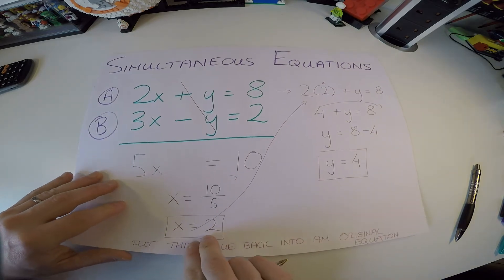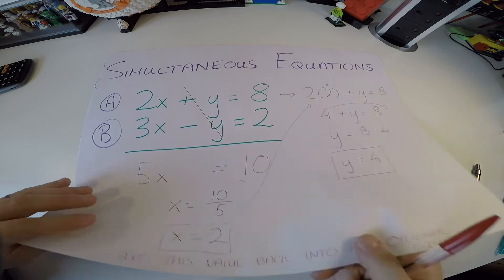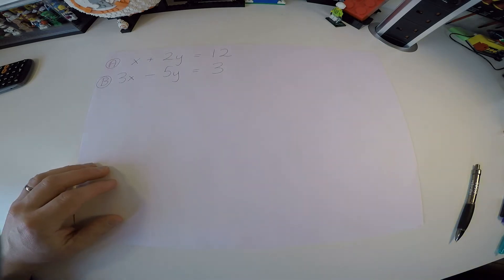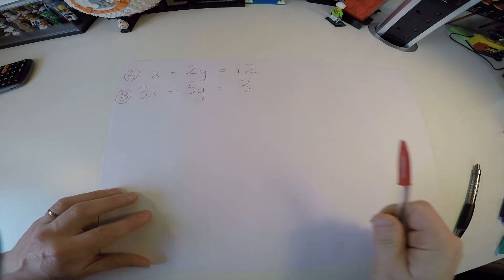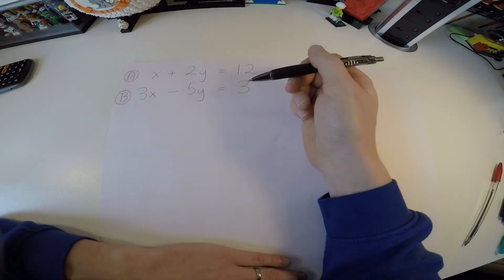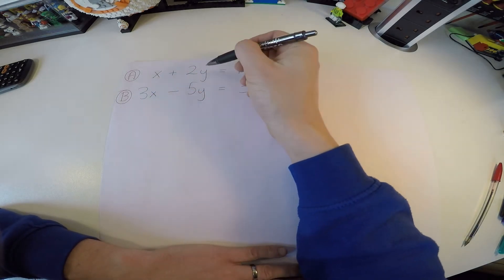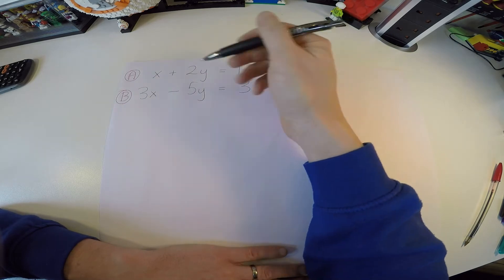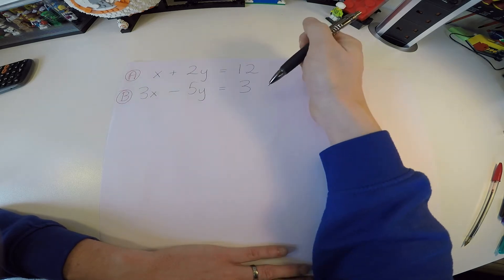As I said at the start of the video, it's not always going to be that easy. We're going to go on to ones where we have to manipulate the equation. So let's look at this one here. I have my equation a and b. Problem is, I have an x plus 2y and a 3x minus 5y. So none of the terms are matching up.